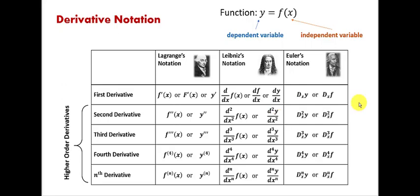Finally, Euler's notation. Euler's notation is the one where the derivative is represented by uppercase D, and it always has a subscript. That subscript — in this case x — represents the independent variable. The order of the derivative is represented by a superscript placed next to the uppercase D. So we have the second derivative, third, fourth, and the nth derivative.